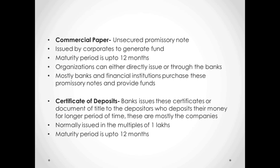Commercial papers are unsecured promissory notes issued by corporates to generate funds. Corporates use them when they are in need of funds to meet their investing activities or projects but are running out of budget. They have a maturity period of up to 12 months and can be issued either directly or through banks. Since they are issued by corporates and are relatively riskier, the general public does not typically go for commercial papers — mostly banks and financial institutions purchase these promissory notes and provide the funds.